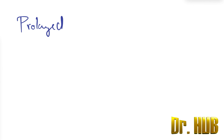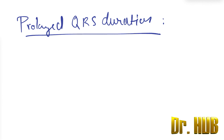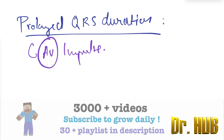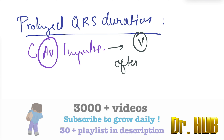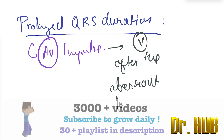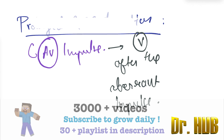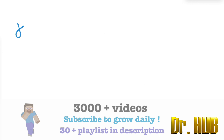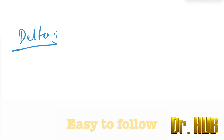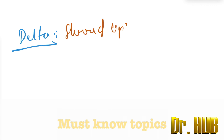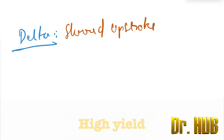Next is the prolonged QRS duration. This is because the AV nodal impulse reaches the ventricles after the aberrant impulse, prolonging the complex. Additionally, delta waves are seen on ECG, which are a slurred upstroke of the QRS complex.